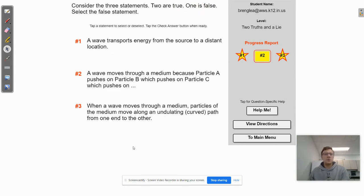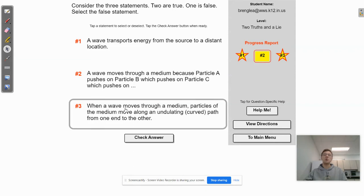OK. And the third question here. So number one, a wave transports energy from the source to a distant location. That sounds pretty good. Number two, a wave moves through a medium because particle A pushes on particle B, which pushes on particle C, which pushes on, etc. And number three, when a wave moves through a medium, particles of the medium move along an undulating curved path from one end to another. So the common theme here is trying to get you to recognize that the particles do not actually move or they're not displaced. Right. They move. They vibrate, but they end up in the same place. So one and two are talking about that. That's true. Number three is false.